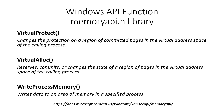or changes the state of a region of pages in the virtual address space of the calling process. And WriteProcessMemory, which writes data to an area of memory in a specified process. You can learn more about these functions in the memory API by visiting the Windows API documentation.